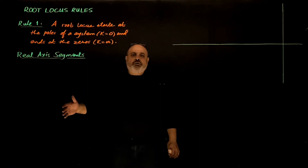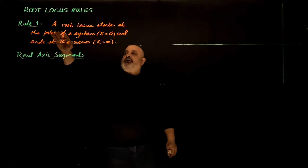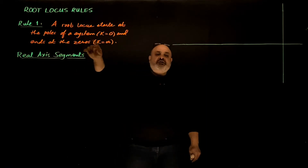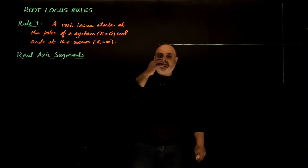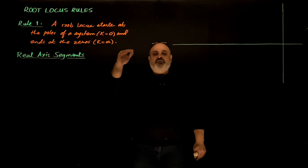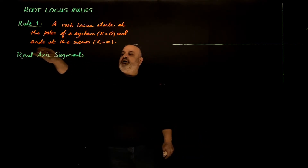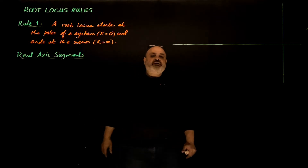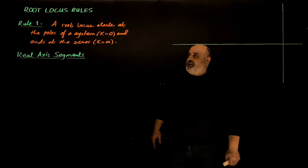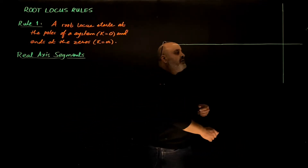The first rule of root locus is that the root locus starts at the poles of the system. When K is zero, the roots are at the poles of the open-loop transmittance GH. When K is infinity, the roots will be at the zeros of GH, the open-loop transmittance. Now let's move on and try to find other rules.